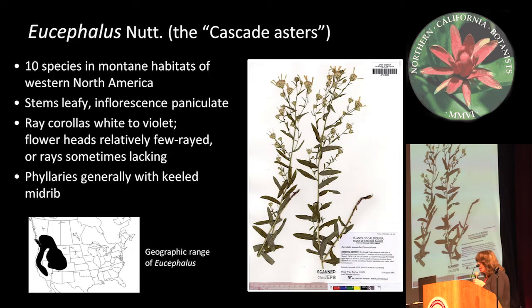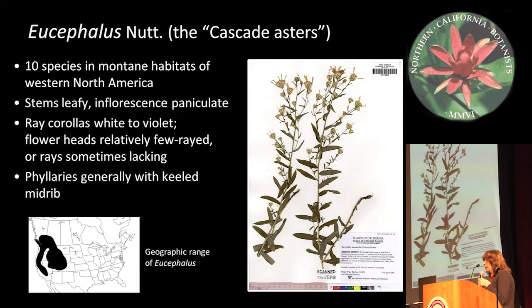Eucephalus is a small group of about 10 species. It's one of the many things that used to be aster in the broad sense and is one of the segregate genera of asters in North America. They're often called the cascade asters and they're widespread in mountain habitats over western North America. They look like a lot of asters do — they're leafy-stem perennials with paniculate inflorescences. They have white and violet ray corollas.